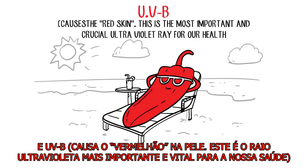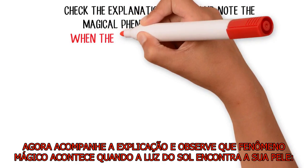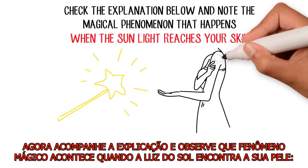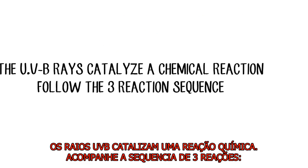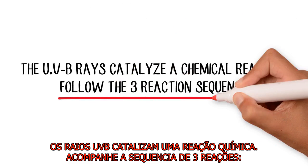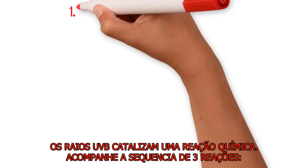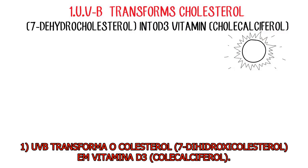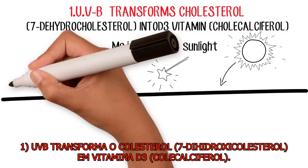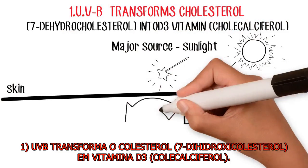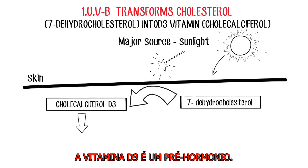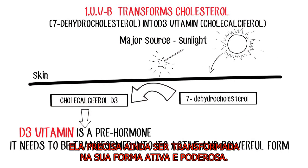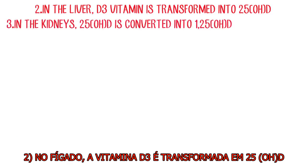Check the explanation below and note the magical phenomenon that happens when sunlight reaches your skin. The UVB rays catalyze a chemical reaction — follow the three-reaction sequence. One: UVB transforms cholesterol 7-dehydrocholesterol into D3 vitamin cholecalciferol. D3 vitamin is a pre-hormone; it needs to be transformed into its active, powerful form.